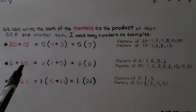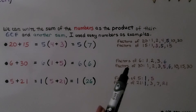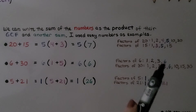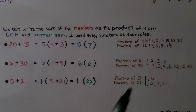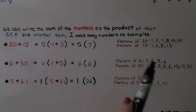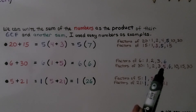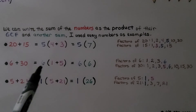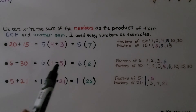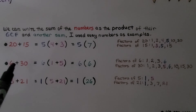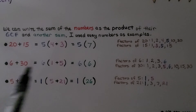For 6 plus 30, we write the factors of 6 and 30 and find their GCF, which is 6. We need 6 times something to equal 6 — that's 1. And 6 times something to equal 30 — that's 5. So we get 6(1+5). 1 plus 5 is 6, and 6 times 6 is 36. 6 plus 30 is also 36 — correct!